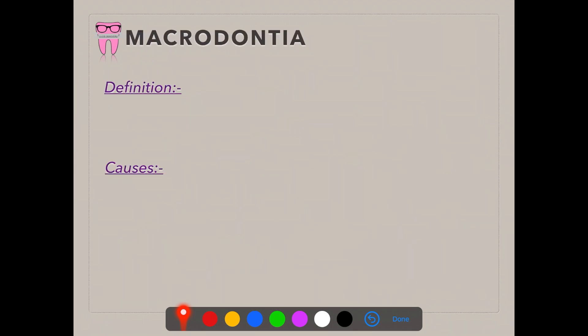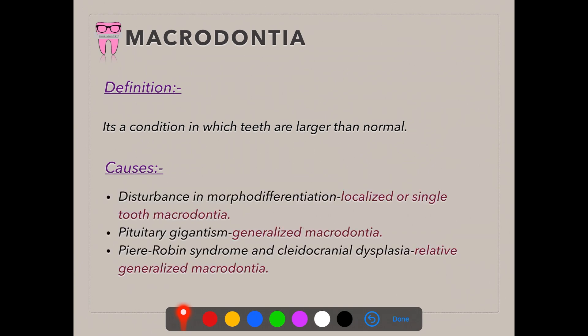Now coming to macrodontia — macro means large, doncia means teeth, so macrodontia means large teeth. It is a condition in which teeth are larger than normal. The first cause is disturbances in morphodifferentiation, which refers to morphogenesis of the enamel organ — the stage where folding of the inner enamel epithelium gives shape to the future tooth. Disturbances at this stage result in localized or single-tooth macrodontia.